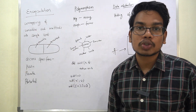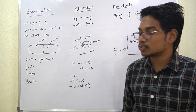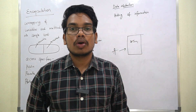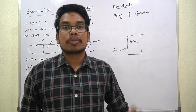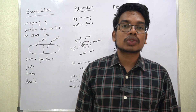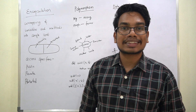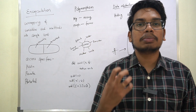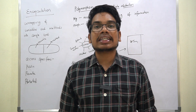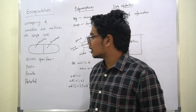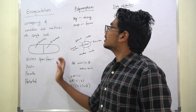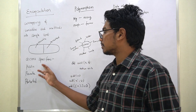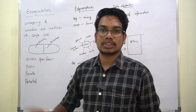Encapsulation is possible using Access Specifiers. Access Specifiers are Public, Private, and Protected. In OOP, we have data security. By using access specifiers, you can secure your data. Public, Private, Protected — this is Encapsulation.